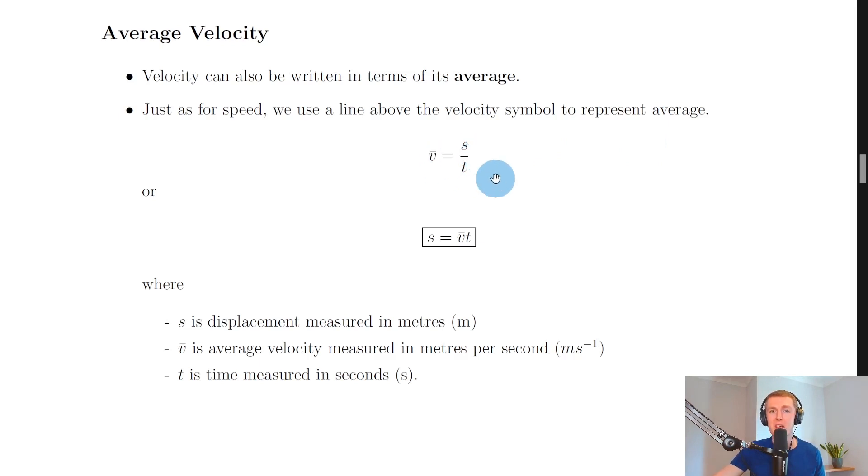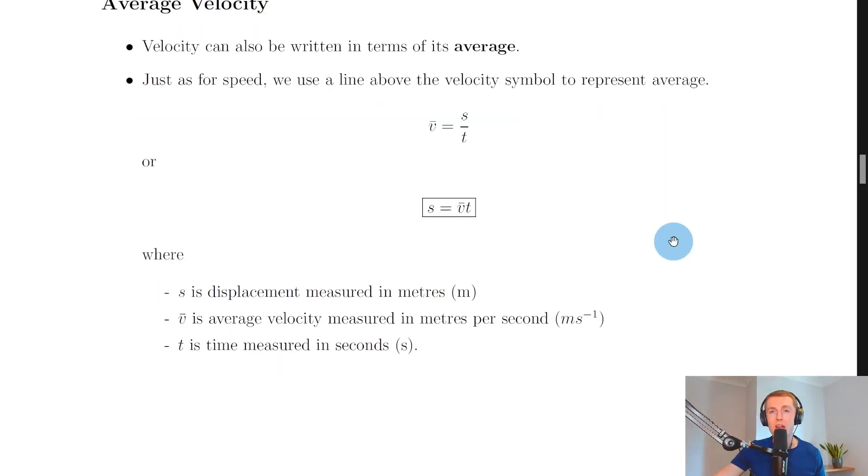We have average velocity v̄ equals displacement s divided by the time, or in the form that you'll get on the relationship sheet in the exam, we have s equals v̄ times t.